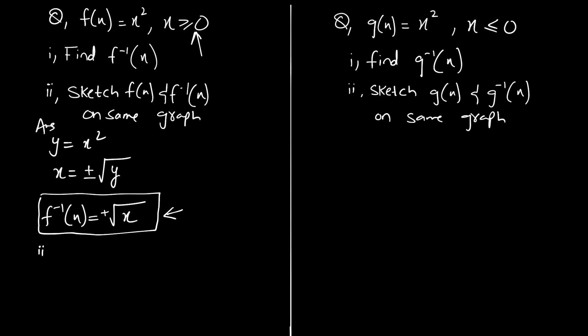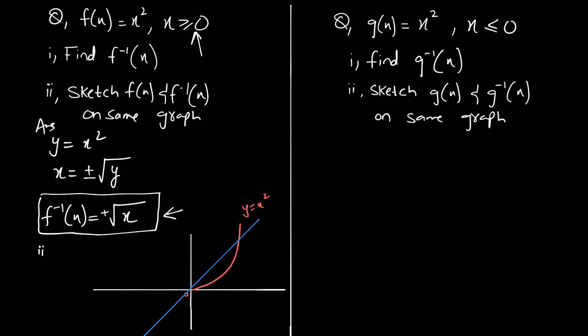To sketch f(x) and f⁻¹(x) on the same axes: f(x) = x² for x ≥ 0 starts at the origin. The inverse function is the reflection of f(x) in the line y = x. The point (0, 0) maps to (0, 0). If f(x) and f⁻¹(x) intersect, they will intersect on the line y = x.